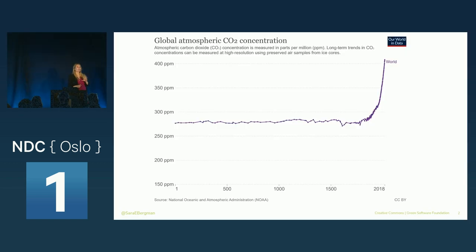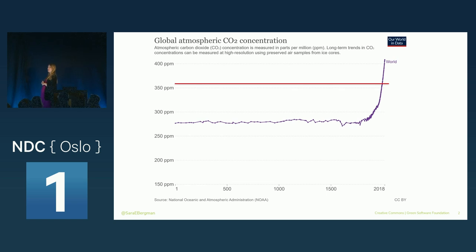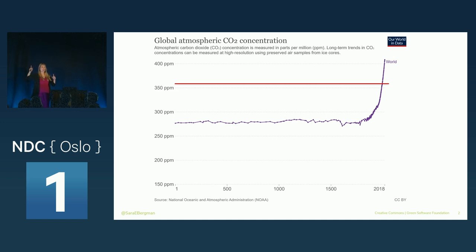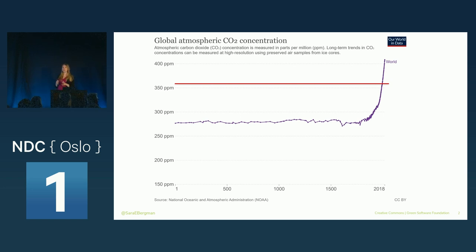This is a chart over the global atmospheric CO2 concentration since the year zero. I was born here at 359 parts per million. My parents were born at 320 parts per million and my child will be born at 420 parts per million. Now we all remember how an exponential curve works. What that means is that we have been aware of the rapid rate of climate change since I was born, since all of you were born as well. There is scientific consensus that the amount of greenhouse gases that humans are responsible for emitting into the atmosphere is causing our climate to rapidly change.